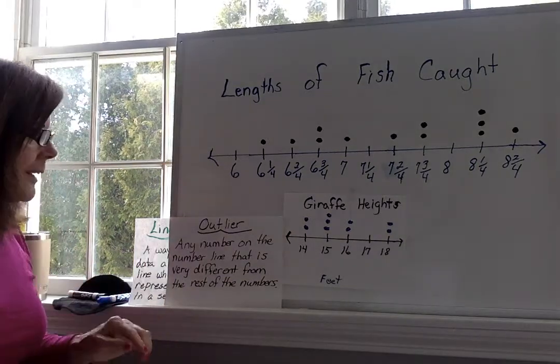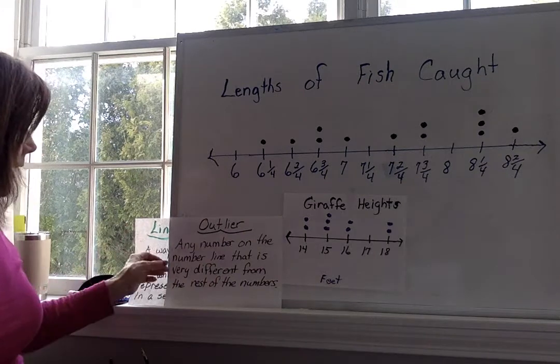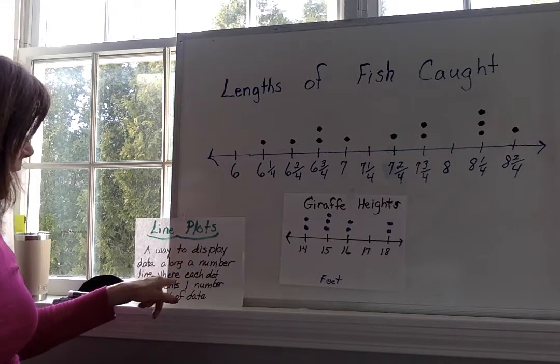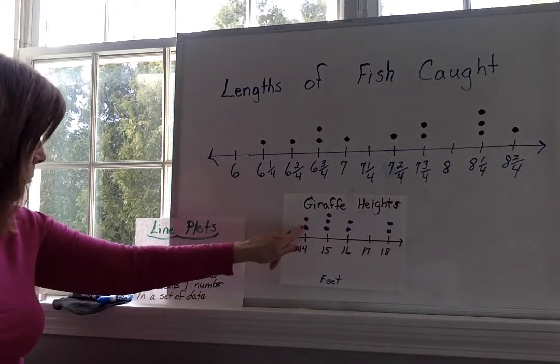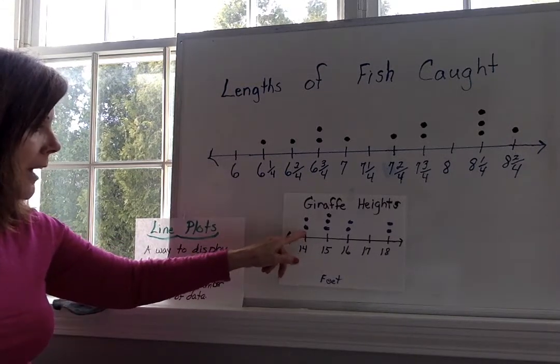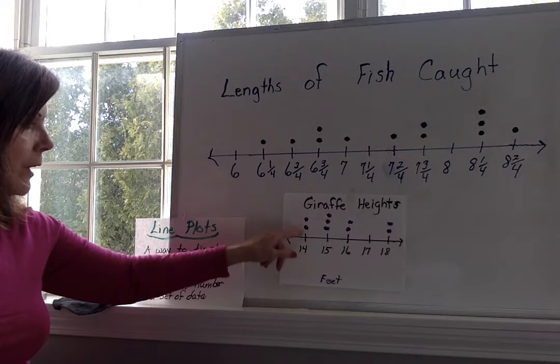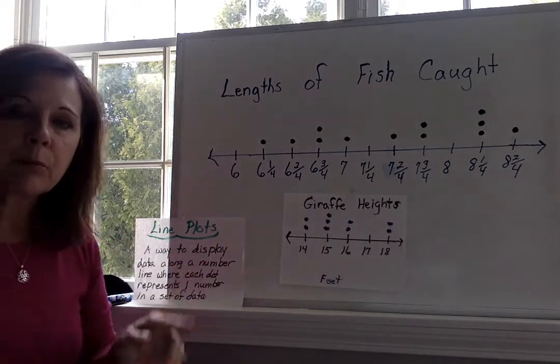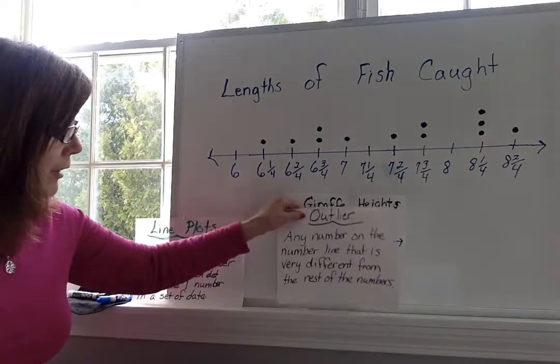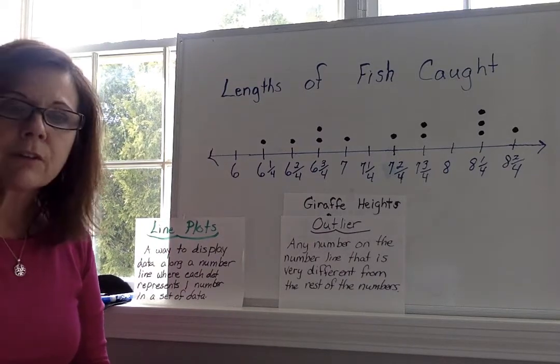All right. So, that gives you some idea as to what line plots are. And we remember that a line plot is a way to display data along a number line where each dot represents one number in the set of data. So, as you can see, one giraffe is 14 feet tall. And then, we add another one. Two giraffes are 14 feet tall. So, each dot on the number line represents data, represents a number of the giraffes. Okay. And as you remember, an outlier is any number on the number line that is very different from the rest of the numbers.